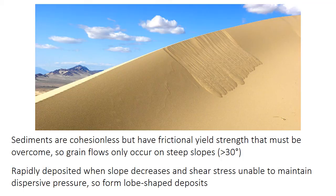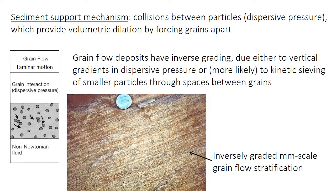In this picture, you can see how these flows end quite abruptly near the base of the slope. The flow also doesn't spread out laterally because it would lose too much energy by doing so, and therefore the shear stress would fall below the yield strength. So the deposits end up being these sort of lobe-shaped blobs, as shown in this photo. As mentioned, the sediment support mechanism in grain flows is something called dispersive pressure.